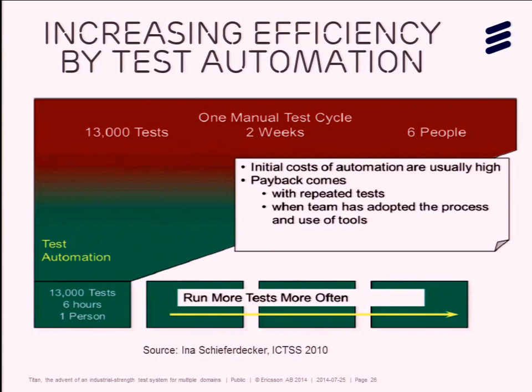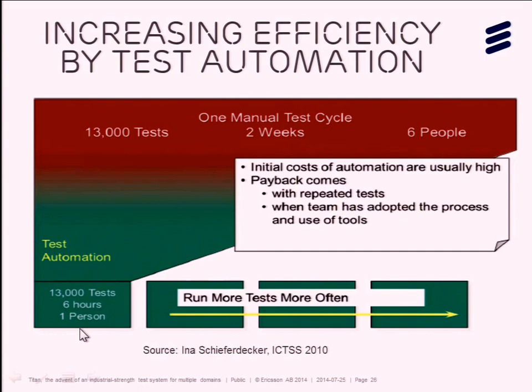A study from Fraunhofer in Berlin showed the impact of automating testing. Running 13,000 tests was taking two weeks and six people. With TTCN, by automating those tests, you can go from six people and two weeks down to one person and six hours. You can then feed that automatically into your continuous integration system for a much faster development turnaround.